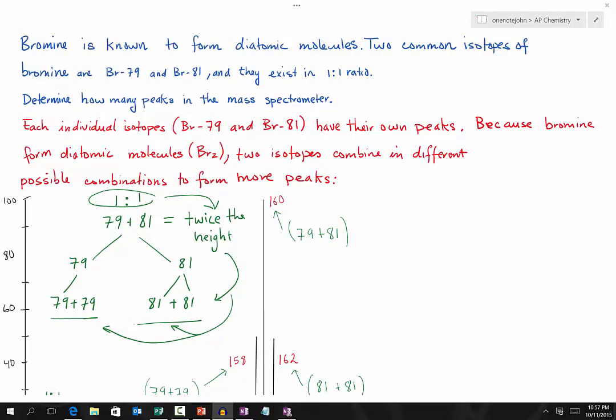One of the challenging problems about mass spectrometry is when you have elements that form diatomic molecules. For instance, bromine is known to form diatomic molecules.